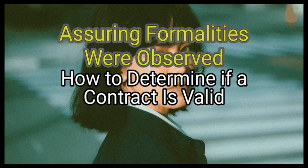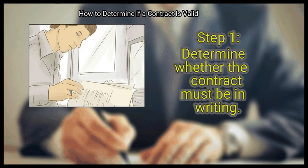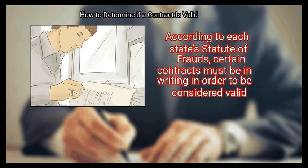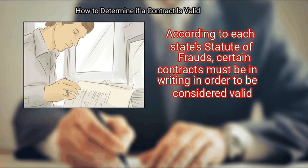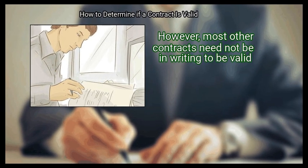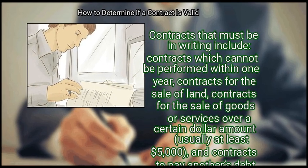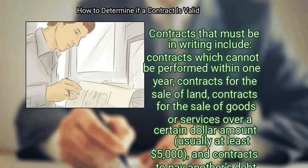Method 2: Assuring formalities were observed. First, determine whether the contract must be in writing. According to each state's statute of frauds, certain contracts must be in writing in order to be considered valid. However, most other contracts need not be in writing to be valid. Contracts that must be in writing include: contracts which cannot be performed within one year, contracts for the sale of land, contracts for the sale of goods or services over a certain dollar amount — usually at least $5,000 — and contracts to pay another's debt.